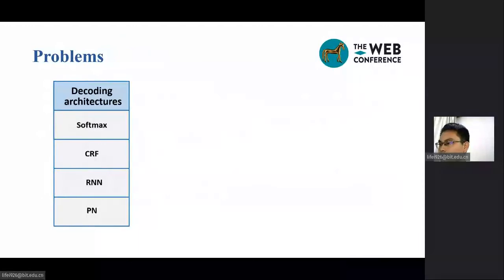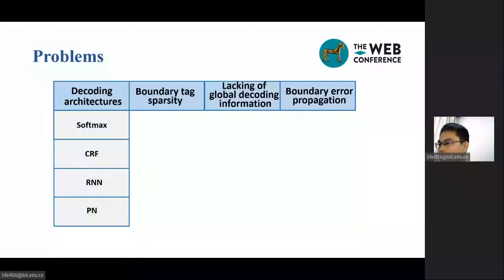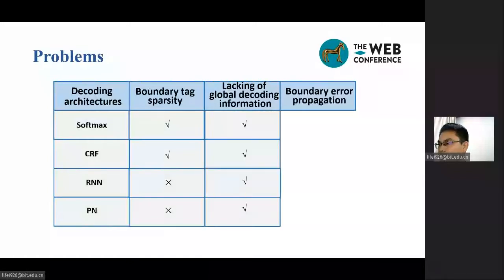Although these approaches are currently the state-of-the-art techniques for NER, they suffer from one or more of the following common problems in NER research: 1. Boundary text sparsity. 2. Lacking of global decoding information. 3. Boundary error propagation. The problem of boundary text sparsity is due to the semantic nature of natural language, in which entities are rare and non-entities are common in a sentence. The lack of global decoding information is a common problem in existing encoder-decoder architectures. The problem of boundary error propagation occurs when pointer networks-based decoders are deployed for the NER task.